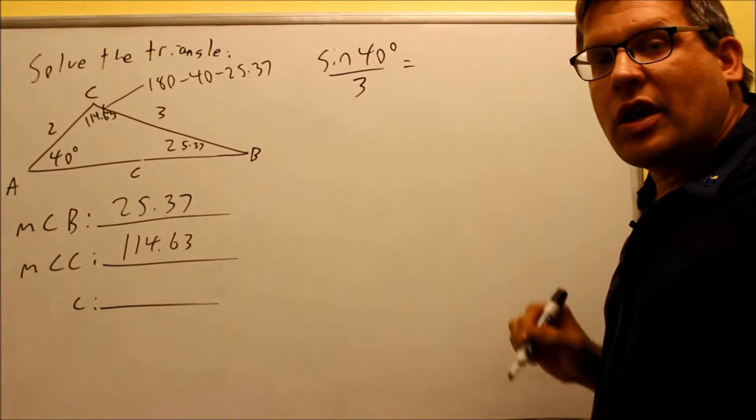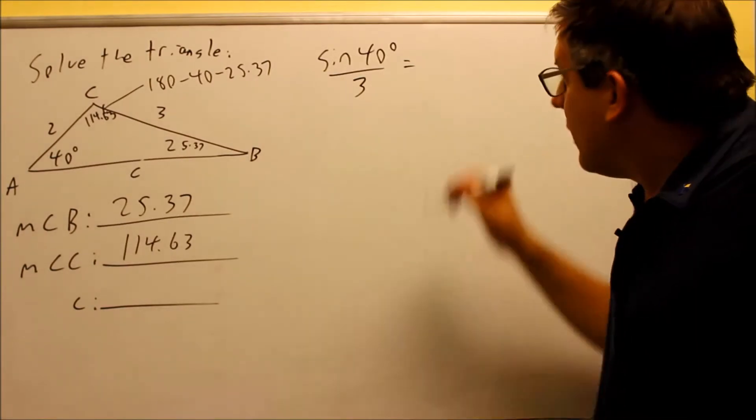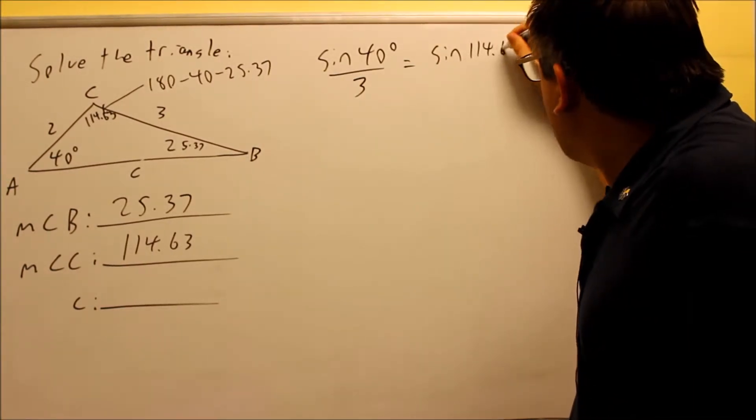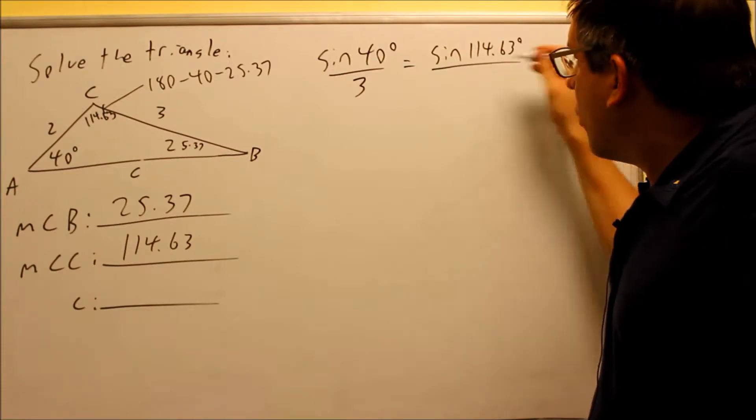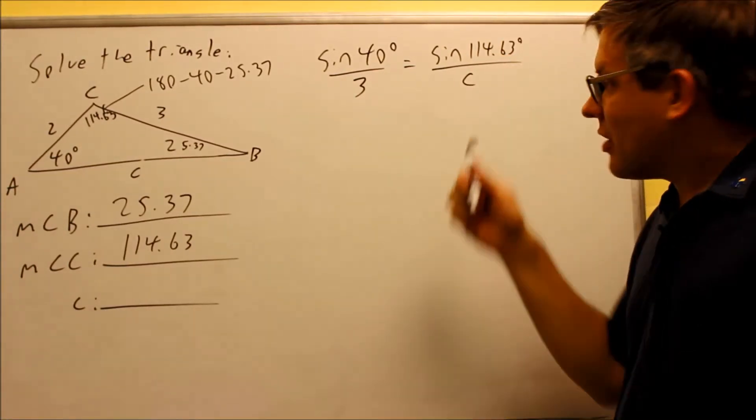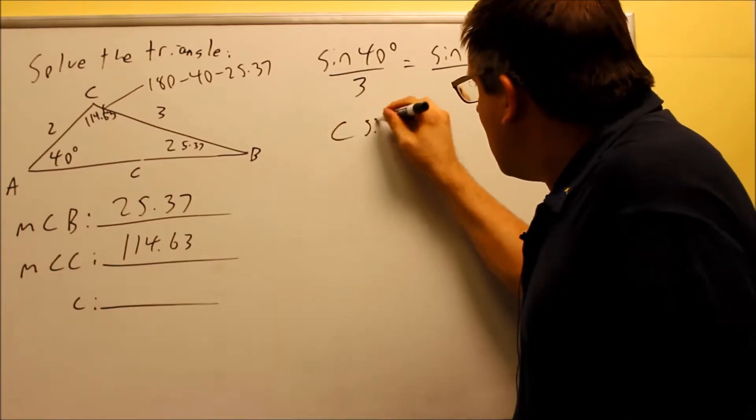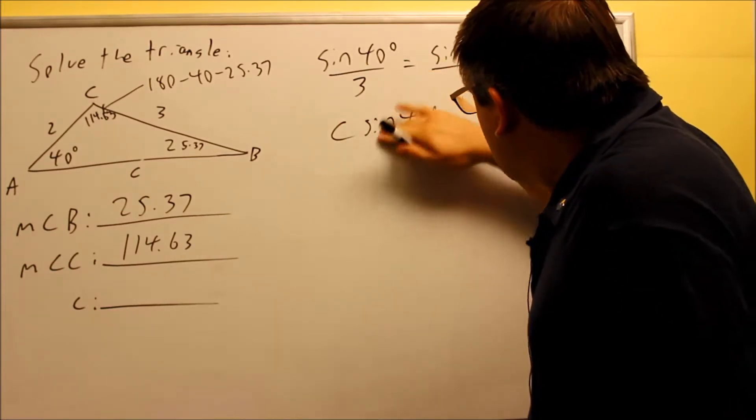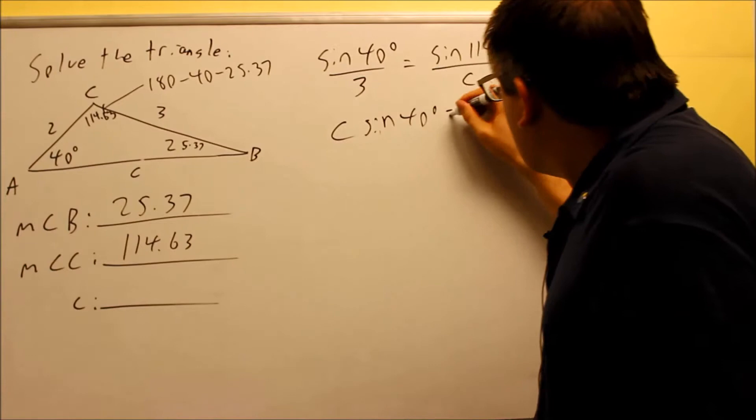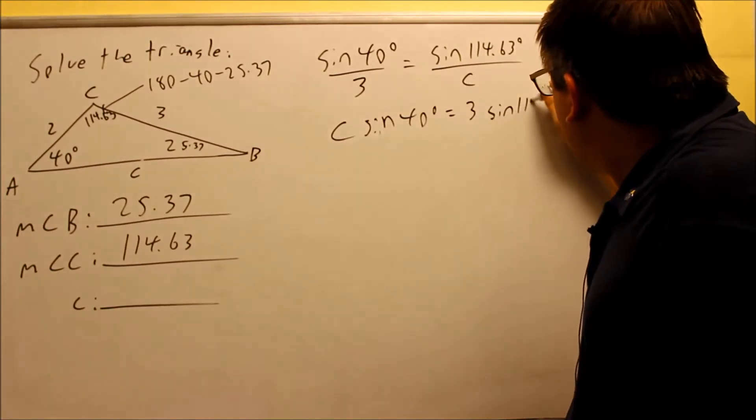Sine 40 over 3, that's our given ratio we began with. Now we're going to do sine of 114.63 over side C because that's now the one that we're trying to solve for. Cross multiply, C sine 40 is going to equal 3 sine 114.63.